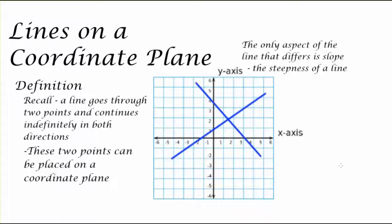And the only aspect of each of these lines that differs is their slope or the steepness of a line. Now these lines could have a very steep slope, a shallow slope, or no slope at all, which would mean the line would basically be flat or horizontal.